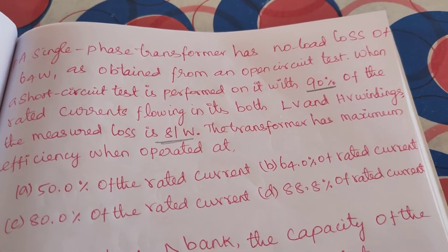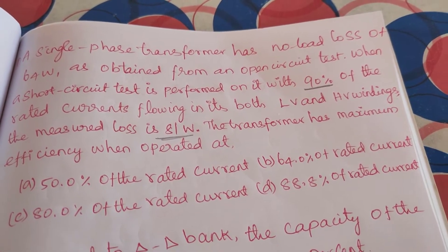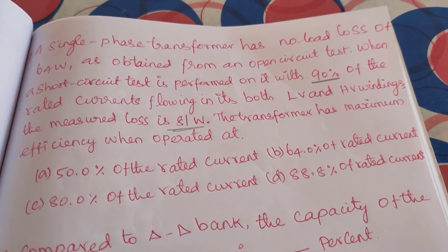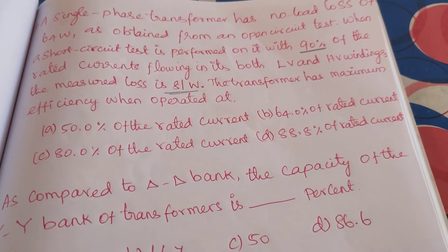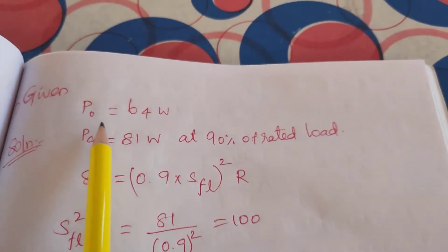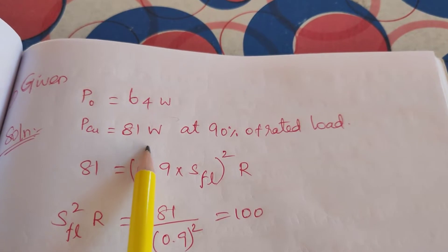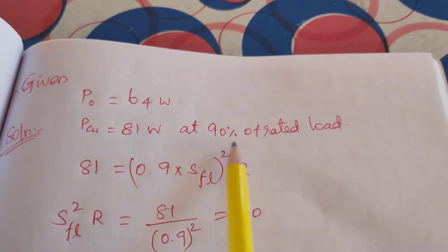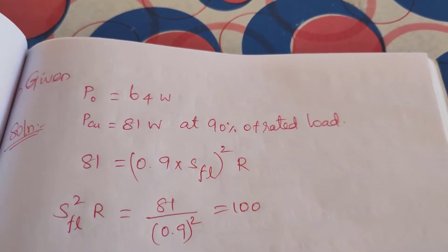The transformer has maximum efficiency when operated at. These are all the options. Solving now. That is given, P no load is 64 watts and loss is 81 watts at 90 percentage of rated load.